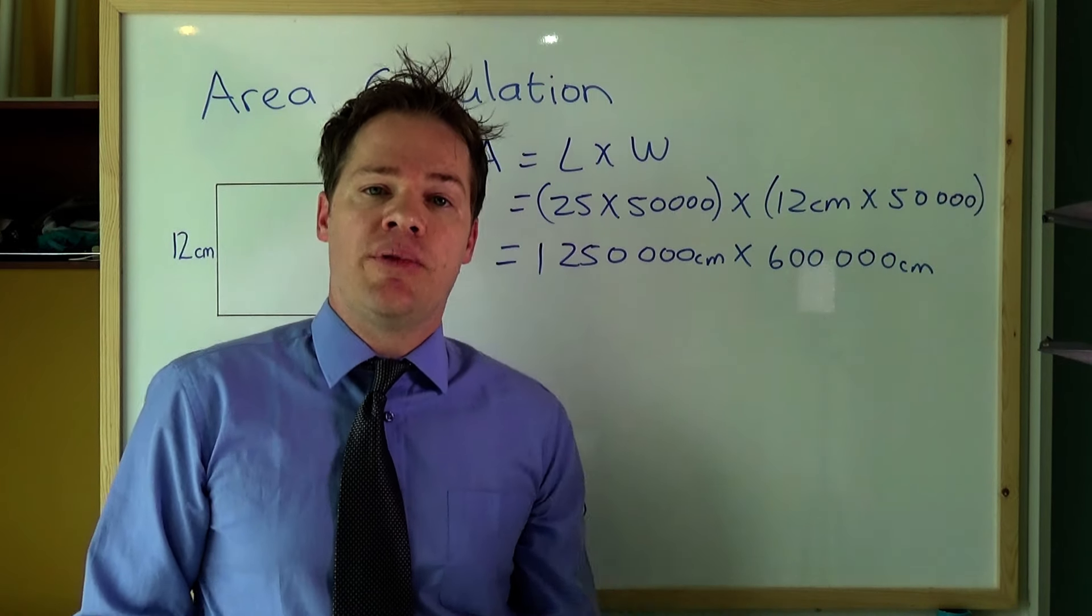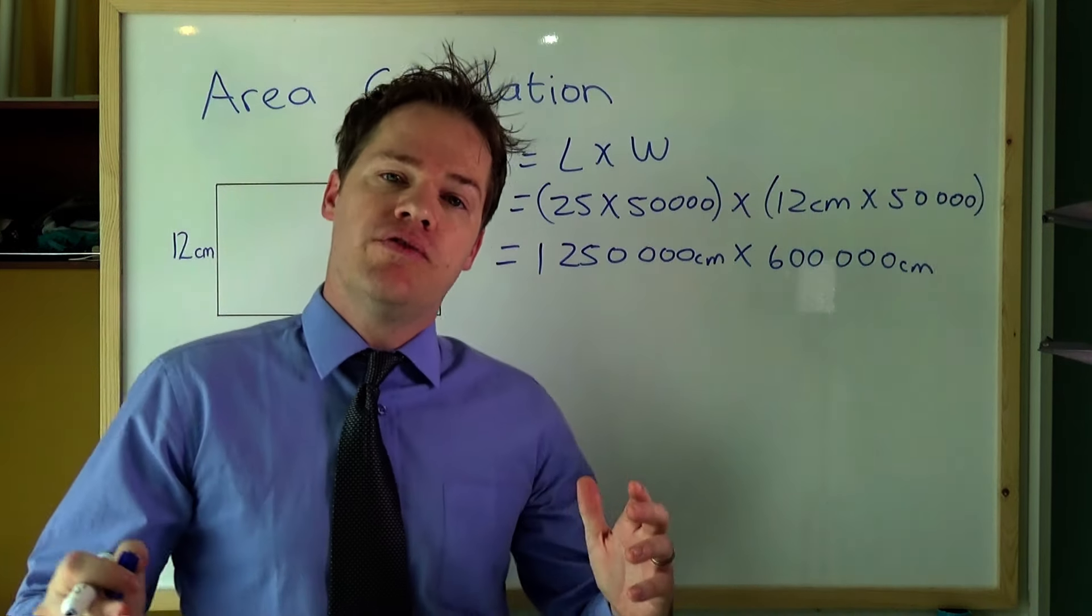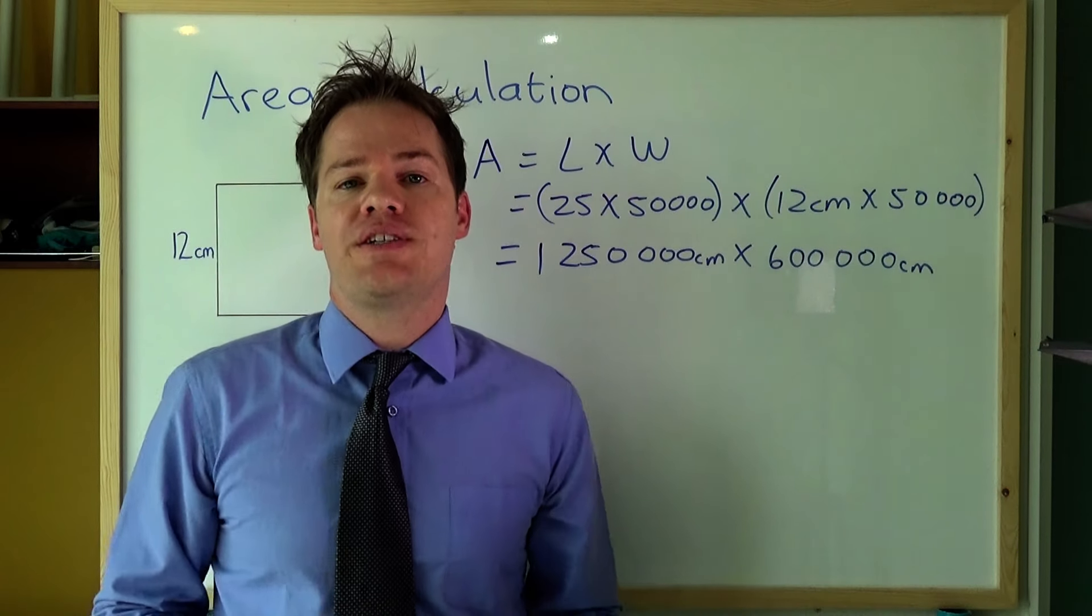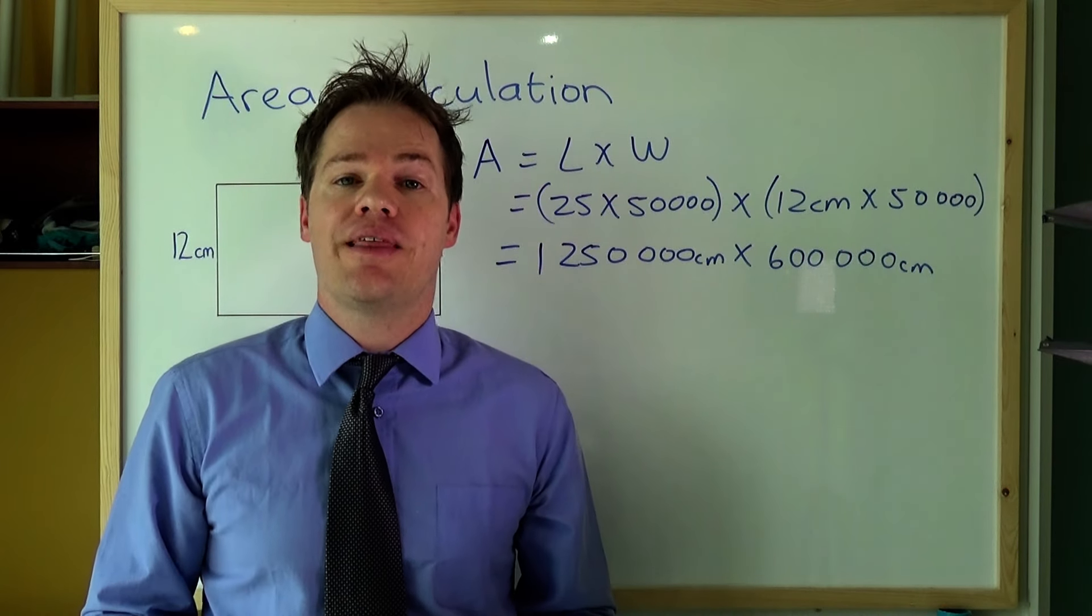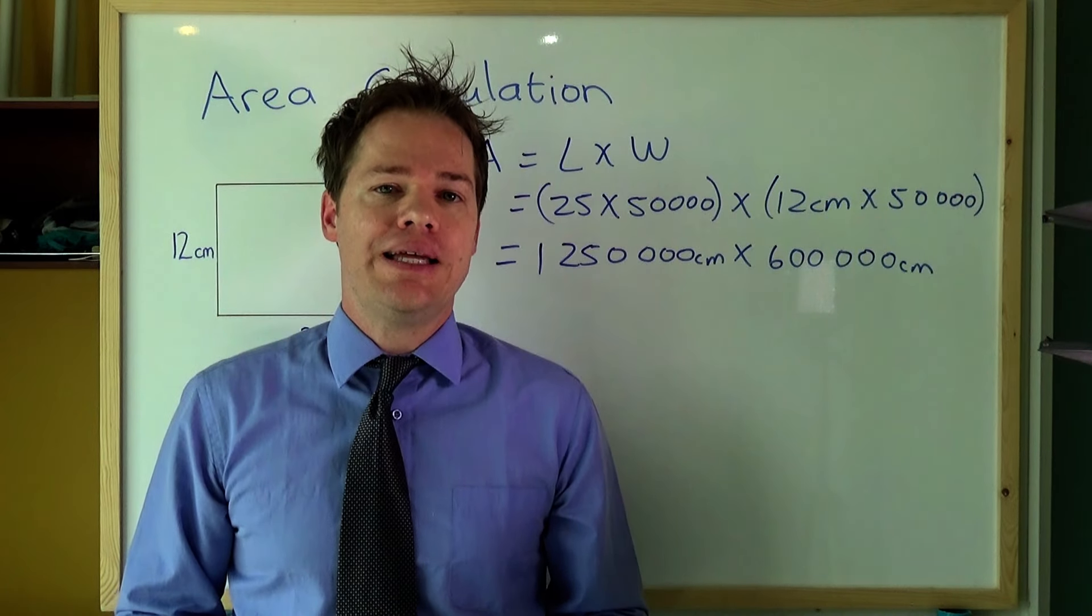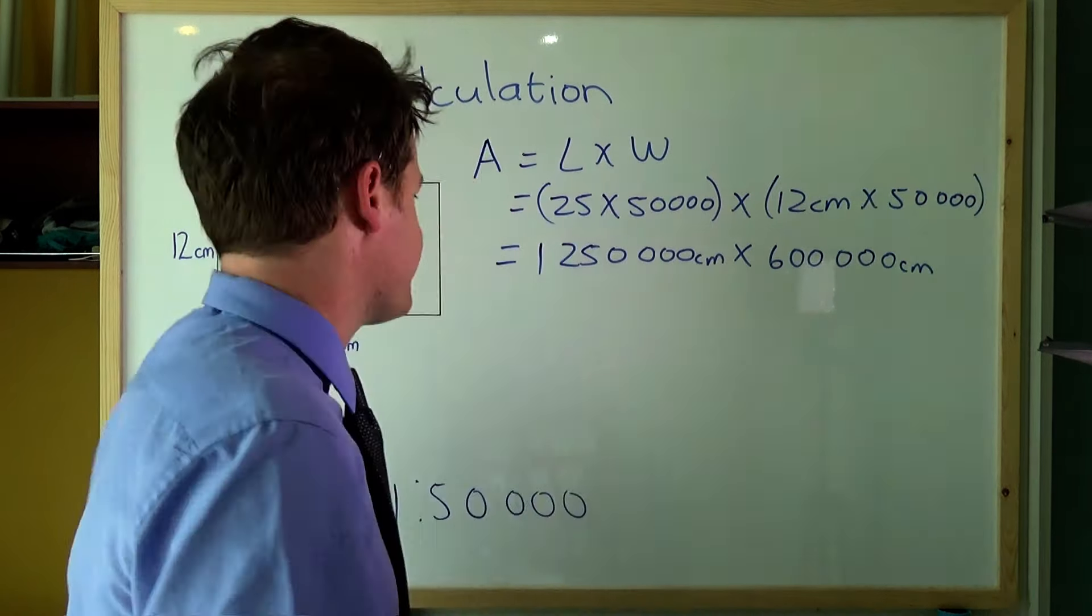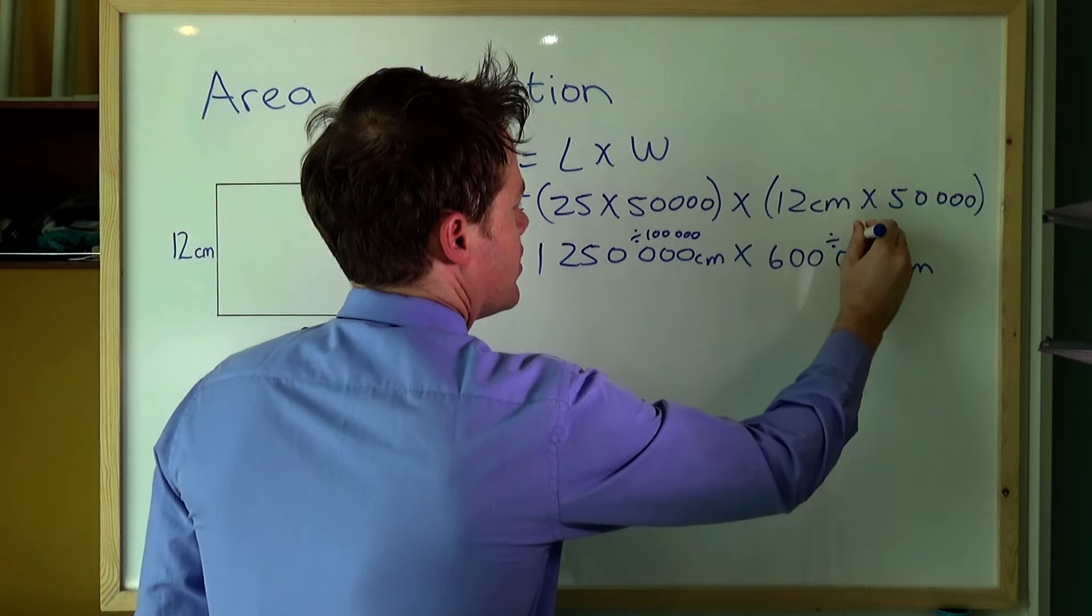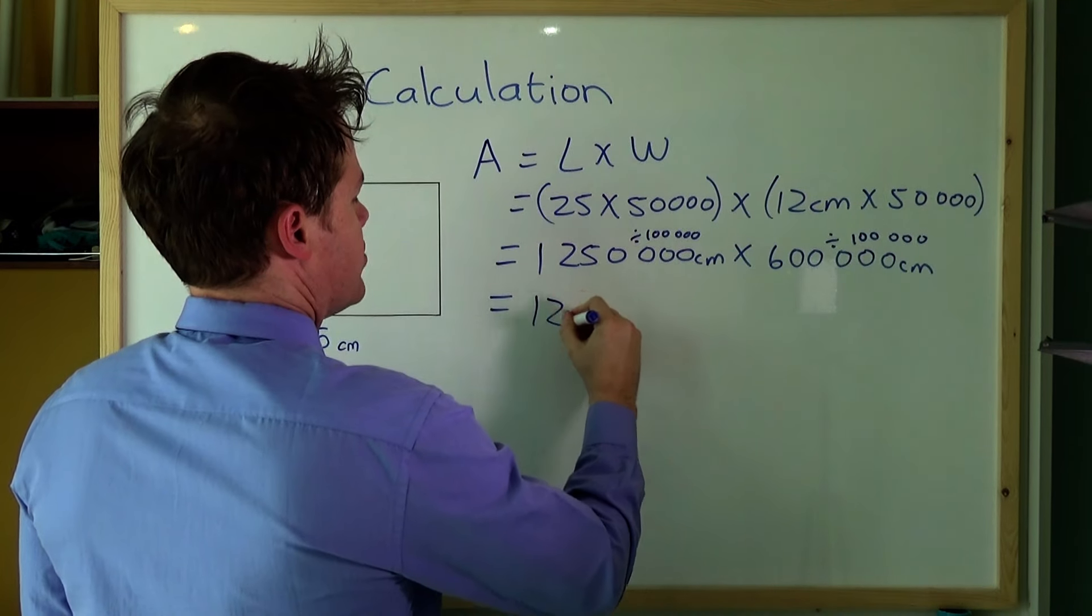Now these numbers are very difficult to work with. So we are going to convert this to kilometers. Always remember, when we convert centimeters to kilometers, we divide by 100,000. When we work with millimeters though, we divide by 1,000,000.